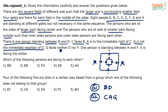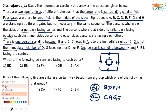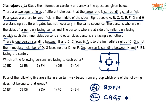Grouping is now mostly done. The next point: G faces neither D nor F, so F also must be in the other group — F cannot be in the group of G. One person is standing between H and F, so H and F are in the same group. E is facing the center, so E will be in the other group. Therefore: B, D, F, H form one group and C, A, G, E form the other group.